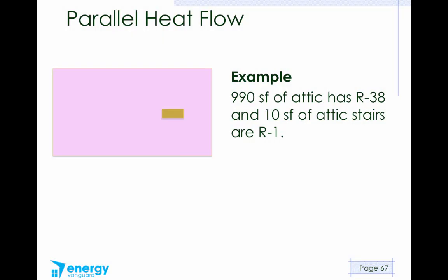Let's look at an example here. This is a simple parallel heat flow problem. Let's say we've got a ceiling, and it's 1,000 square feet total. 990 square feet of it has R38 insulation, but we've got 10 square feet of attic stairs that's uninsulated, and we're going to call that R1. If you want to try this problem yourself, hit the pause button and see if you can calculate the average U value and the average R value for this parallel heat flow problem, and then come back and see if you got it right.